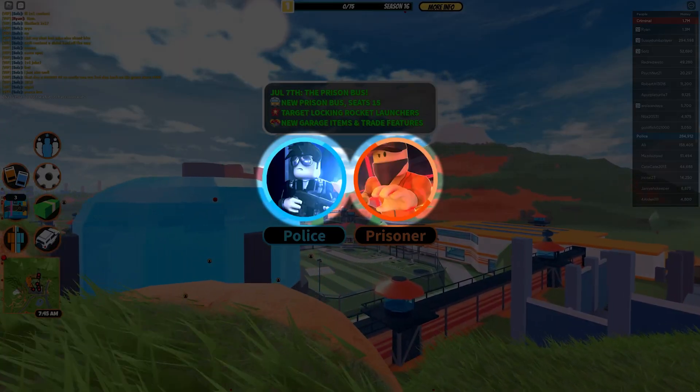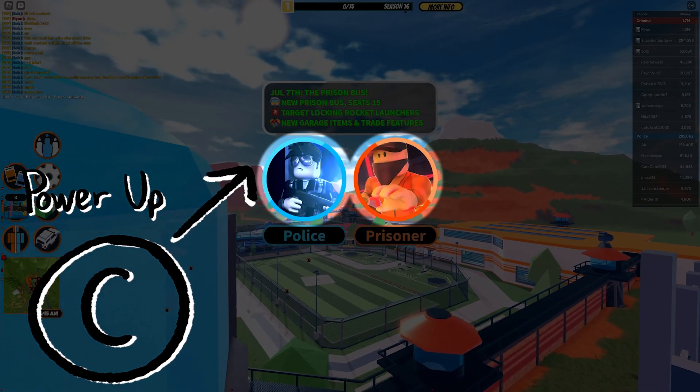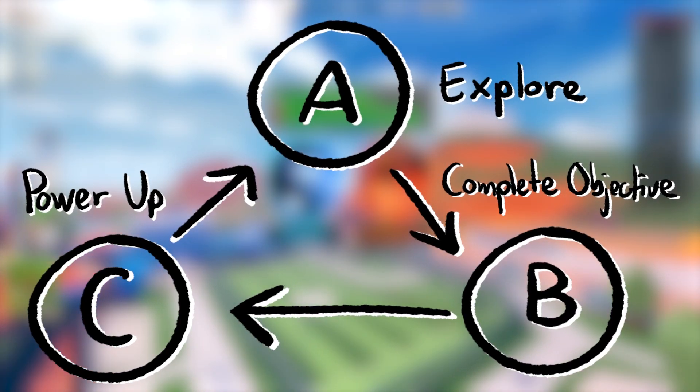In Jailbreak, the police and criminals both have the same progression engine, the purchasing of weapons and vehicles to power up, that then starts another core loop cycle.